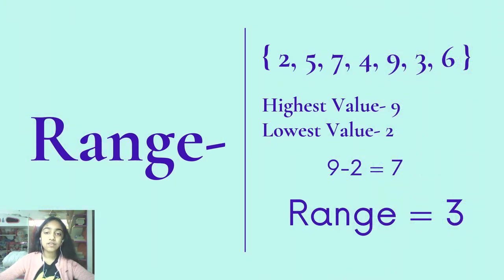Another example: we have the values of the data set are 2, 5, 7, 4, 9, 3, and 6. The highest value is 9, lowest value is 2, so 9 minus 2 is 7, and the range is 7.